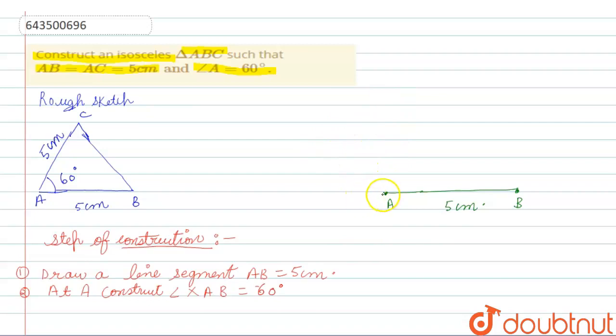At point A, we have to draw an angle of 60 degrees, so XAB is an angle of 60 degrees.